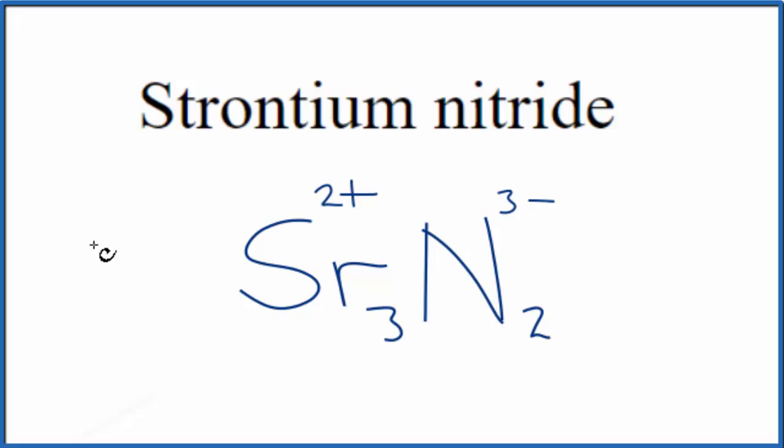3 times 2-plus, that's 6-plus. 2 times 3-minus is 6-minus. These two numbers, add them together, they cancel out, you get a net charge of 0. So the formula for strontium nitride is Sr3N2.